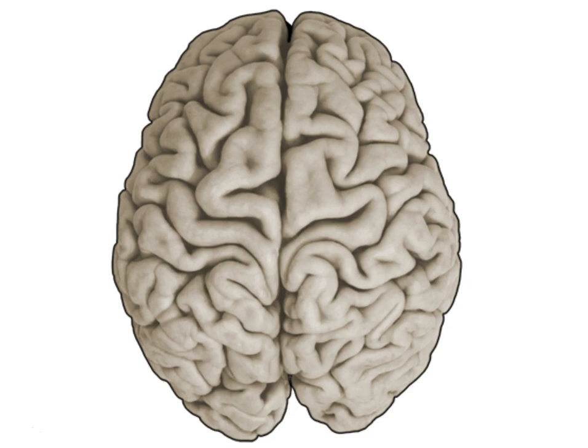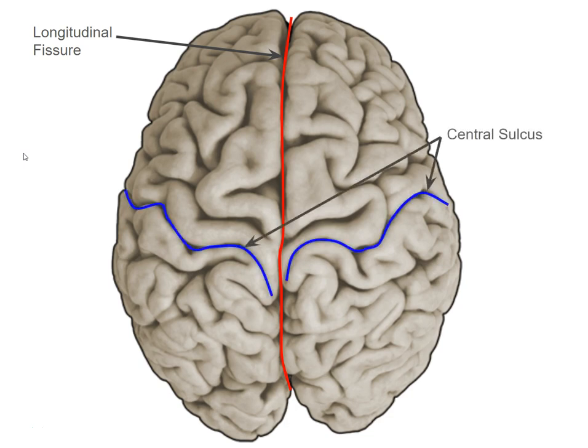What that also means is that our folding — our sulci and gyri — don't necessarily match up with the ones present in the sheep, though there are some evolutionarily very old folds which do match up, as we'll see. Here on the dorsal view, this fold does match up: the longitudinal fissure, which separates the two hemispheres. And then this one's different.